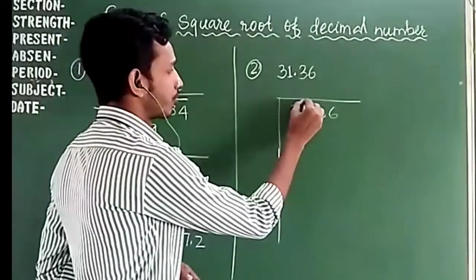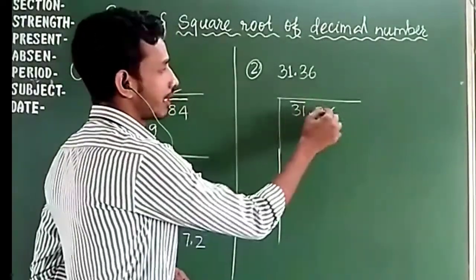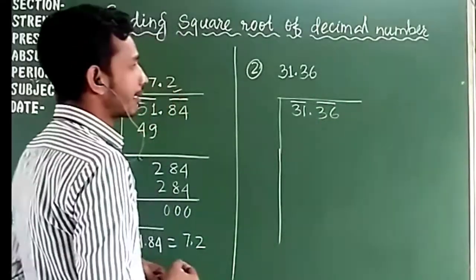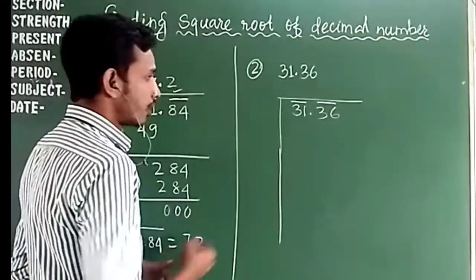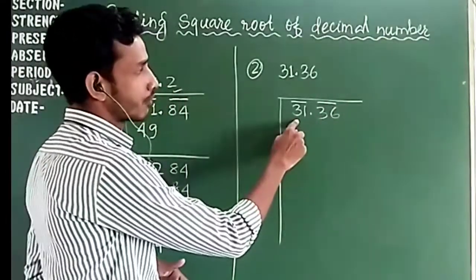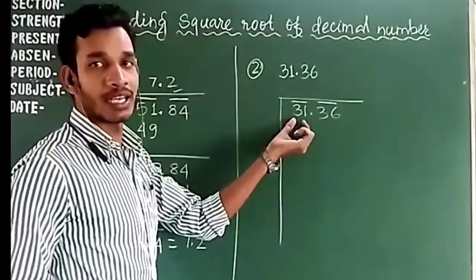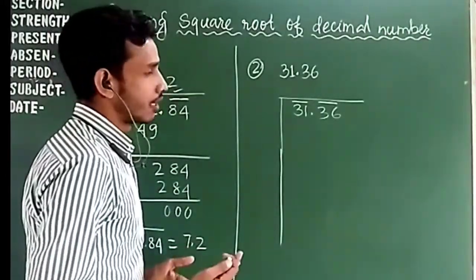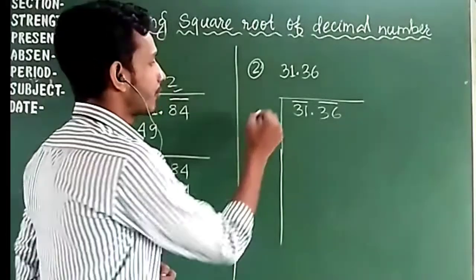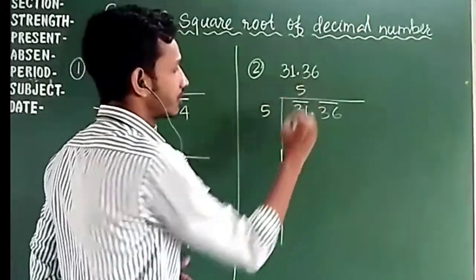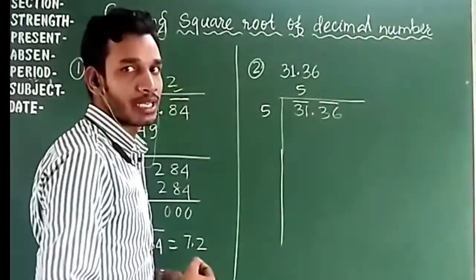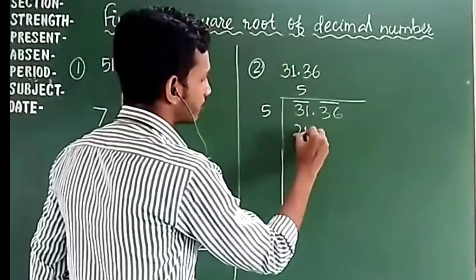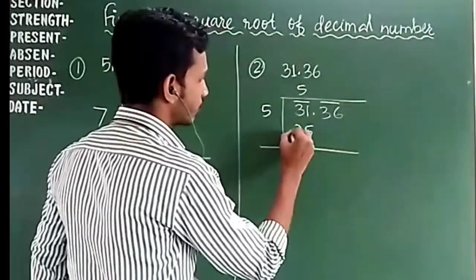For 31.36, from the right we pair the decimal digits, giving us 36, and from the left the whole part gives us 31. We need the square number less than or near 31, which is 5×5 = 25, since 6×6 = 36 would be greater.